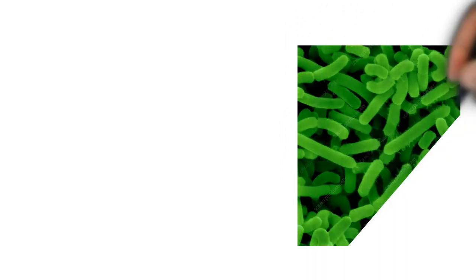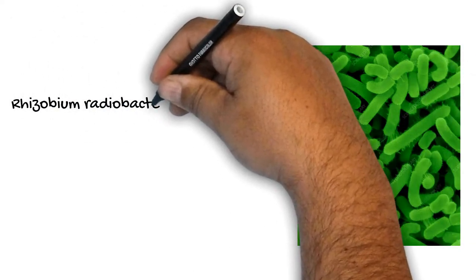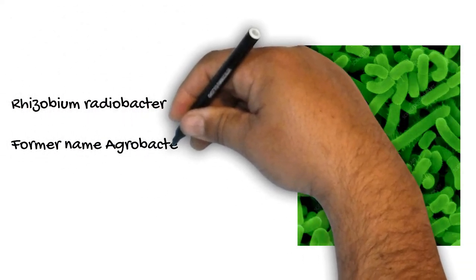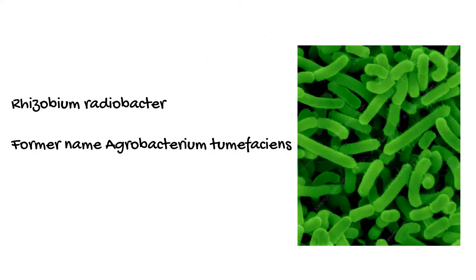This is an electron microscopic photo of Rhizobium radiobacter, which is a gram-negative bacteria formerly known as Agrobacterium tumefaciens. This enters the plant through wounds in roots or stems and stimulates the plant tissues to grow in a disorganized way, producing swollen galls.